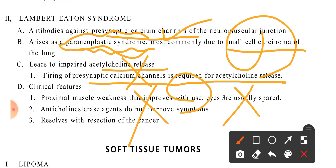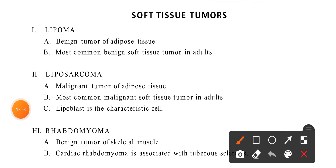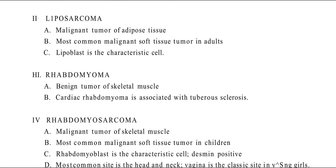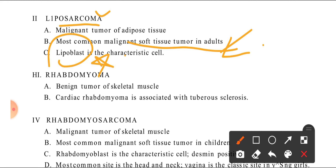Now we talk about soft tissue tumors. Lipoma — 'lipo' means adipose tissue — is a benign tumor of adipose tissue. It is the most common benign soft tissue tumor in adults and is very common. Liposarcoma is the malignant tumor of adipose tissue — it is the most common malignant soft tissue tumor in adults.